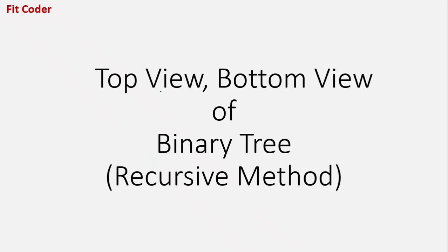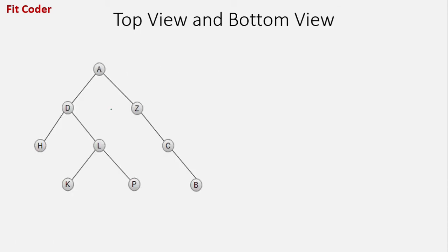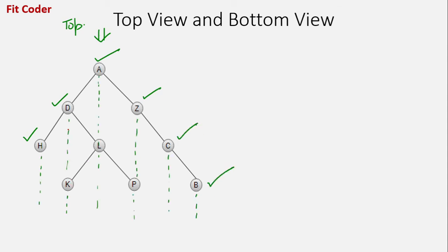In this video we will discuss how we can find the top view and the bottom view of a binary tree using recursive method. So we are given this binary tree - the top view will be those nodes which are visible when we view the tree from the top. The nodes that will be visible are h, d, a, z, c and b. Node k will be hidden by node d, l will be hidden by node a, and p will be hidden by node z, so they are not visible.